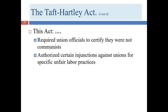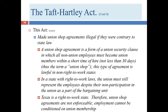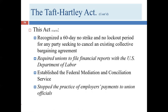The Act also authorized certain injunctions against unions for specific unfair labor practices. It also made union shop agreements illegal if they were contrary to state law — this is where we get the right-to-work requirements. It recognizes a 60-day no-strike, no-lockout period — a cooling-off period when either party is seeking to cancel an existing collective bargaining agreement. Neither the union nor the employer can take those actions during that 60 days. The Act also required unions to file certain financial reports with the Department of Labor.